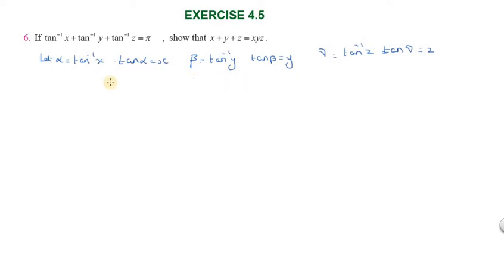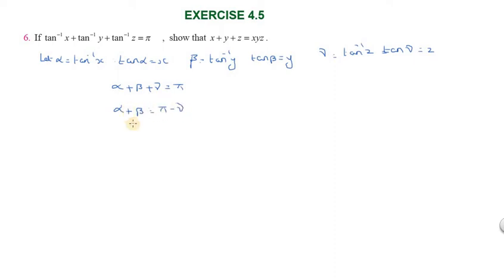So now we have alpha, beta, gamma. And since tan inverse x plus tan inverse y plus tan inverse z equals pi, we have alpha plus beta plus gamma equals pi.